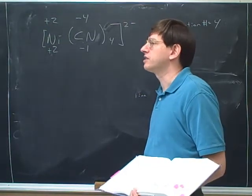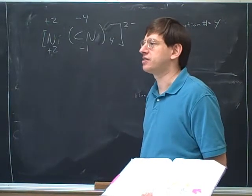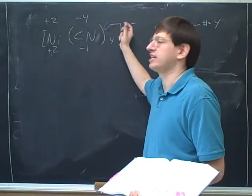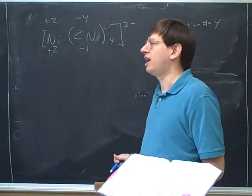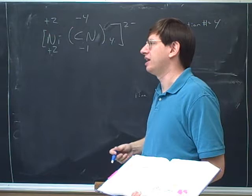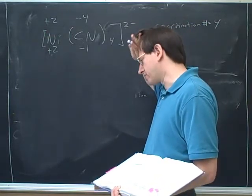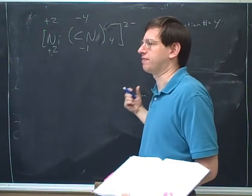This might have wrong-footed you a little, because in the past, all the complex ions I gave you before were cations. This is the first complex ion that I've given you that's an anion. But it can go either way. You could have a complex cation and a counter ion that's an anion. Or you could have a complex anion and a counter ion that is a cation.